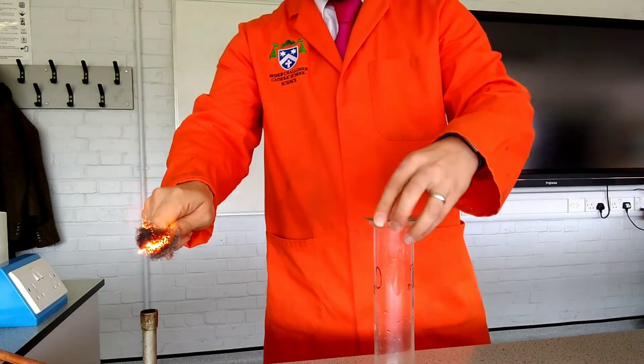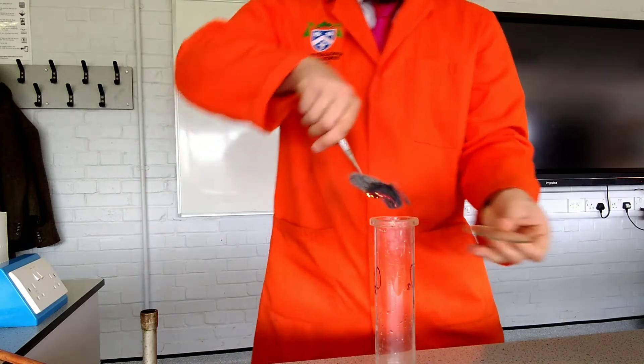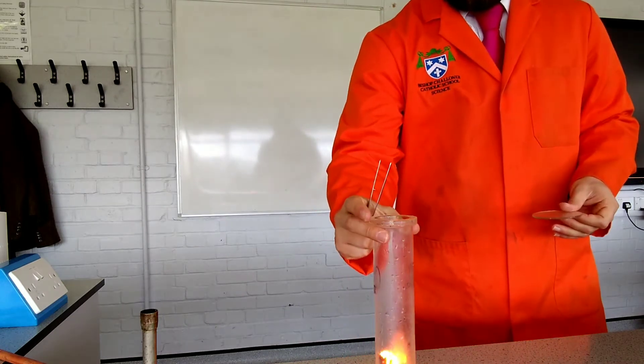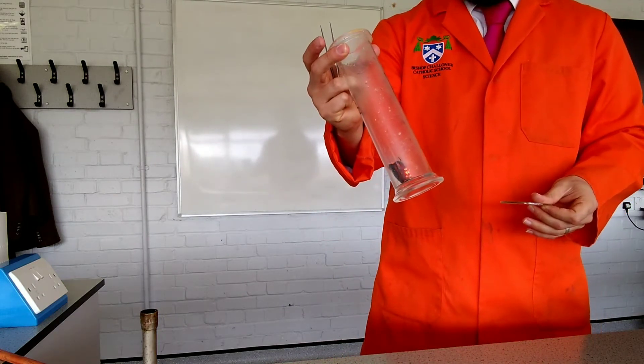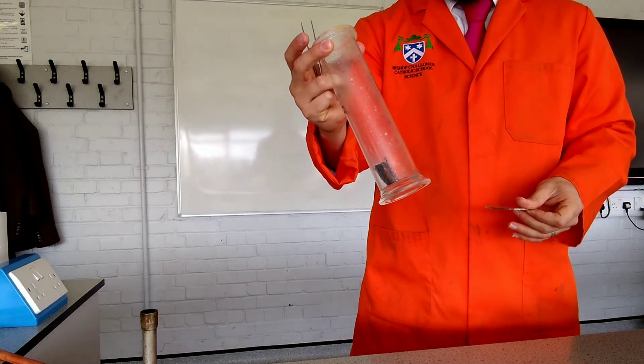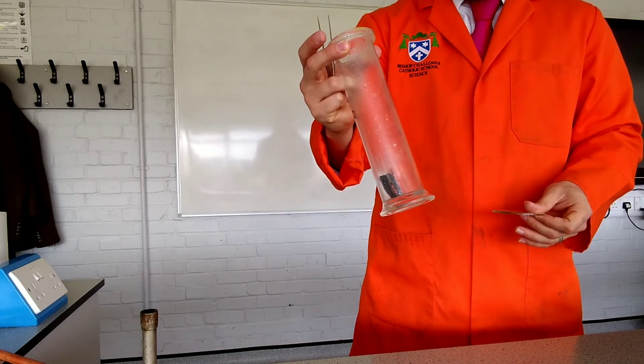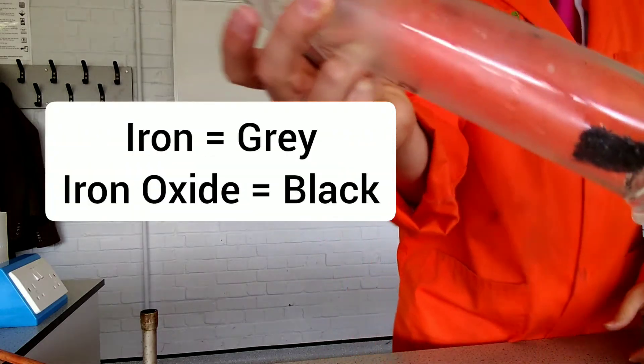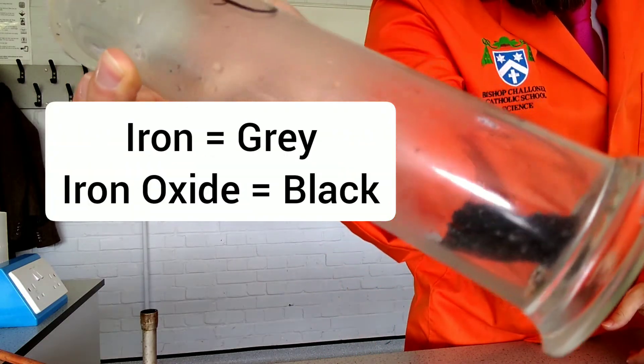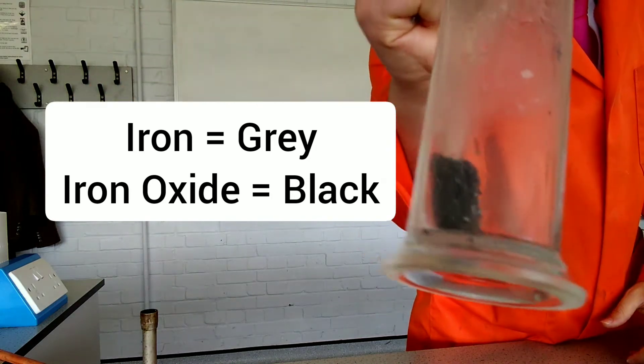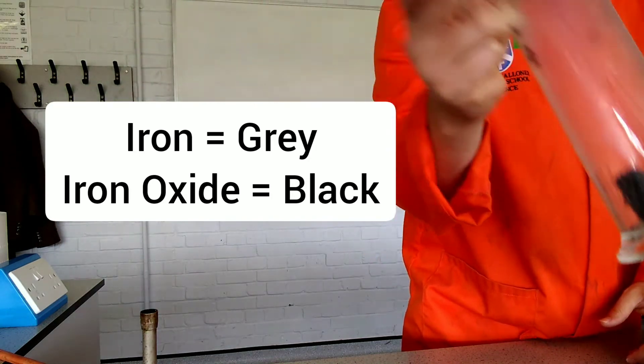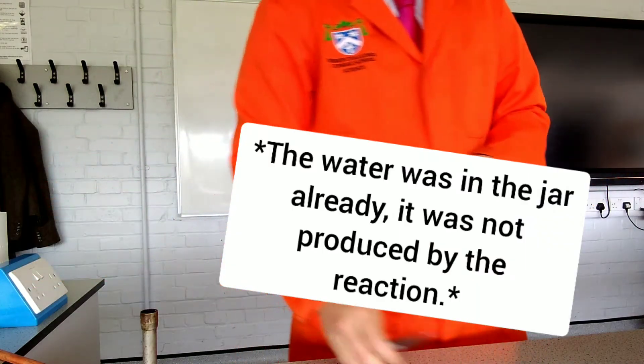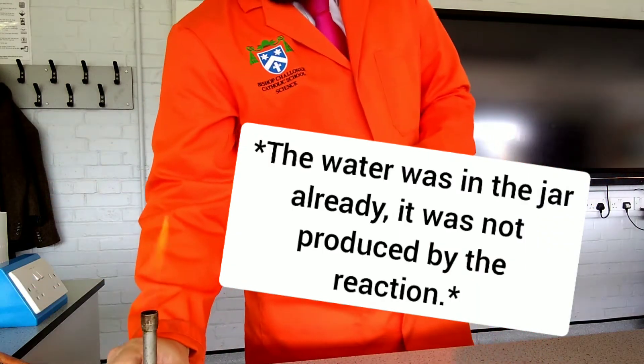So you'll notice that this one actually does burn in oxygen and in the air. And as I place it into the gas jar, hopefully you can see it burns really, really, quite quickly. And that is because of the large surface area. So that was iron wool. You can see now it's already formed that black iron oxide all over it there.